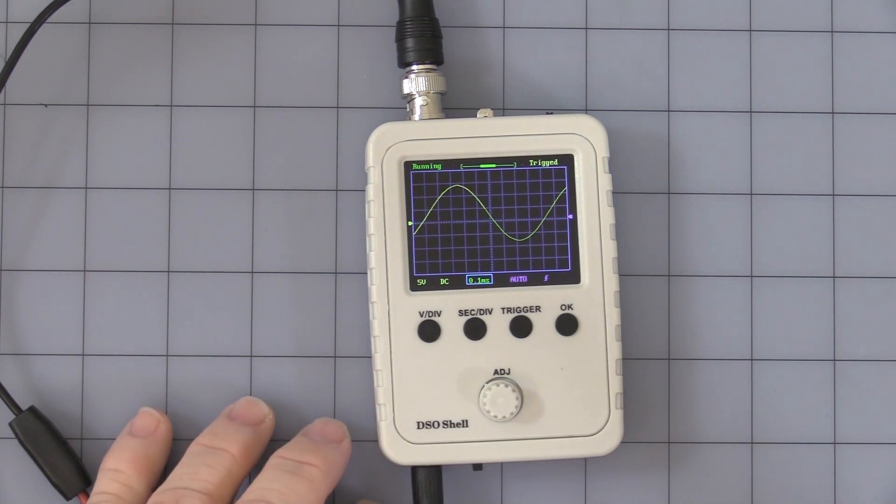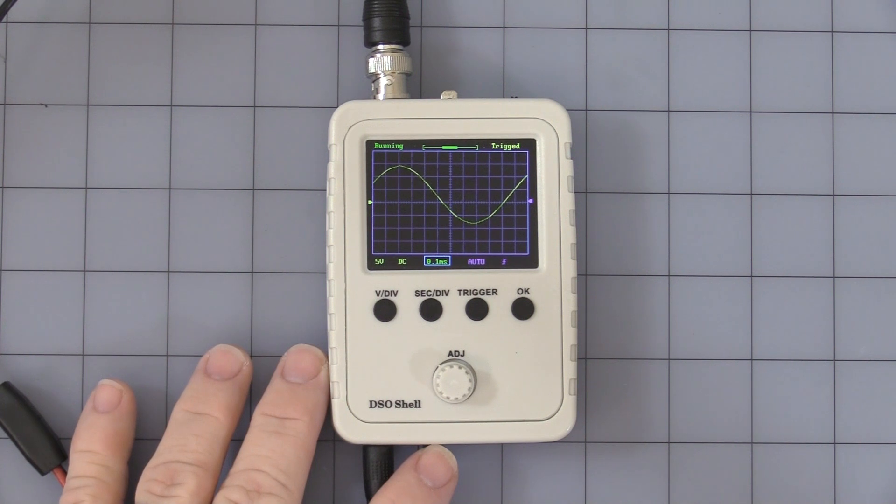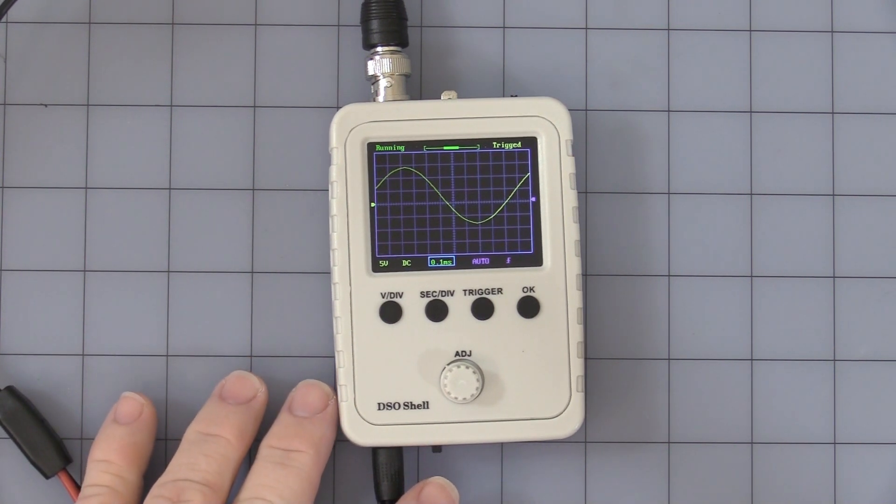There you go, you can see a sine wave and I'll just adjust it up. Pretty simple, basic. Now let's see what else we got. We did square wave, let's try triangle.